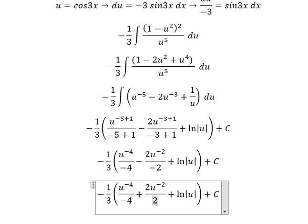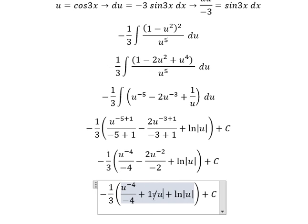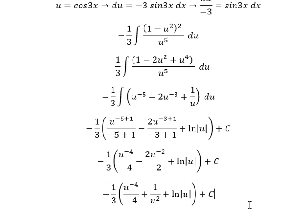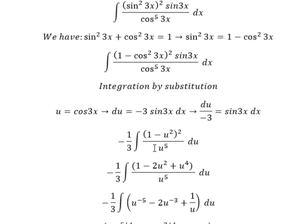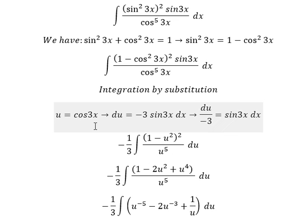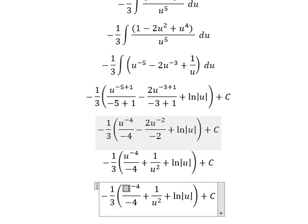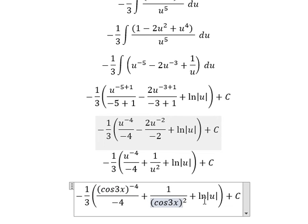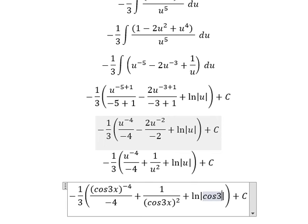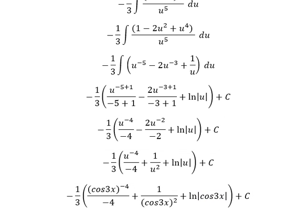Number 2 divided by 2 gives 1, so we have 1 over u^2. Substituting back, u equals cos(3x). This is the final answer. Thank you for watching.